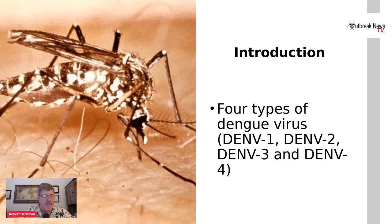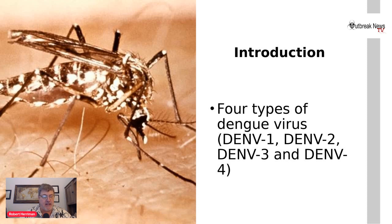Dengue fever is an illness spread by the bite of mosquitoes infected with one of the four types of dengue viruses — dengue virus one through four. Symptoms are usually flu-like but can worsen to severe dengue, or dengue hemorrhagic fever, a life-threatening condition.